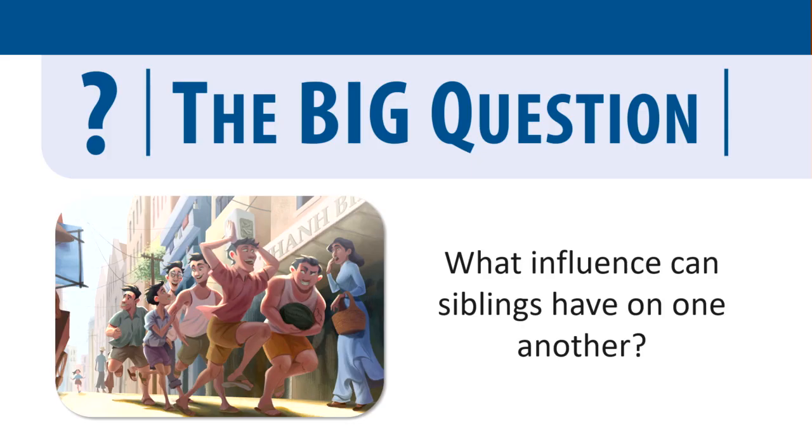We're going to keep moving forward in our unit on relationships by talking about a relationship you might be able to relate to — relationships among siblings. Not everyone gets to have a sibling; you might be an only child. But for many people, the connection they have with their siblings is a formative part of their childhood. Our big question directly relates to this relationship: what influence can siblings have on one another?